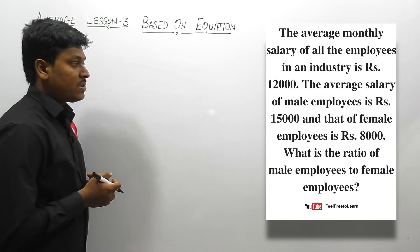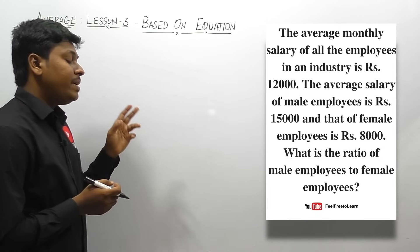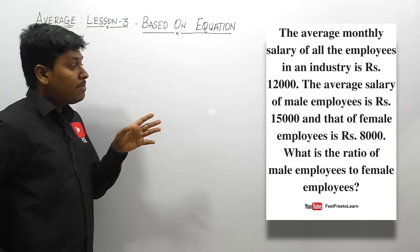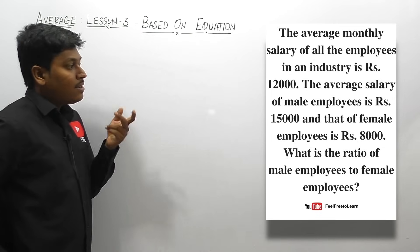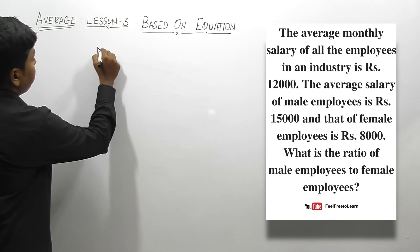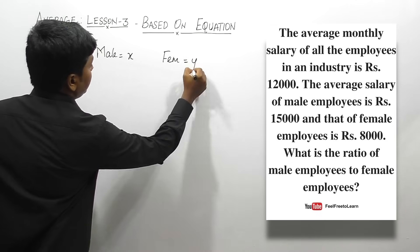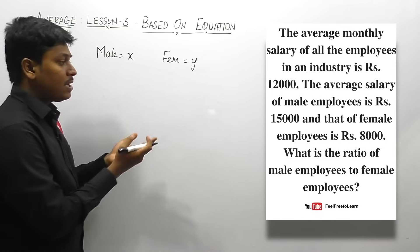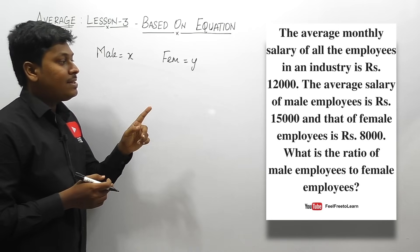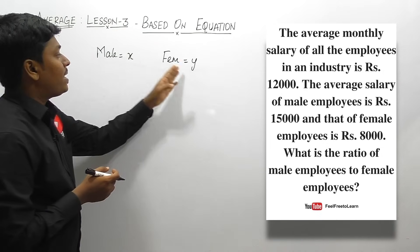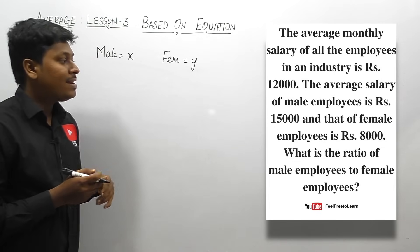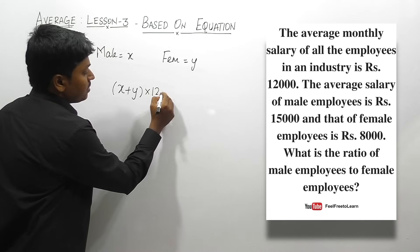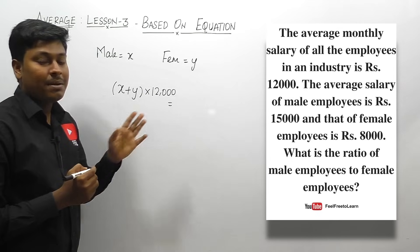Question number three: the average monthly salary of all employees in the industry is Rs. 12,000, average salary of male employees is Rs. 15,000, and that of female employees is Rs. 8,000. Find the ratio of male to female employees. We don't know how many male or female employees there are, so let male employees be x and female employees be y. So (x plus y) into 12,000 equals the total salary.